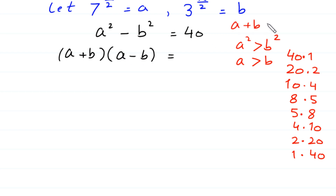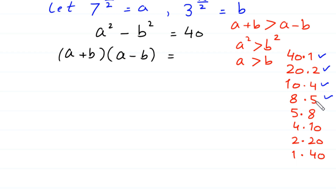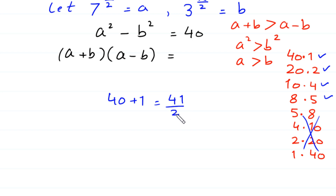Since a plus b must be greater than a minus b, we have four valid factor pairs where the first factor exceeds the second: 40 greater than 1, 20 greater than 2, 10 greater than 4, and 8 greater than 5 — the other four cases are rejected. Checking the first case, 40 times 1: adding 40 plus 1 gives 41, and 41 divided by 2 cannot be written as a power of 7 or 3, so this case is rejected.